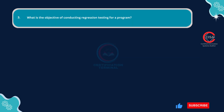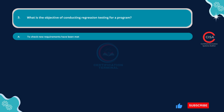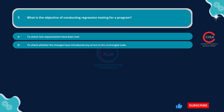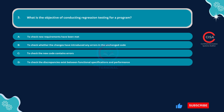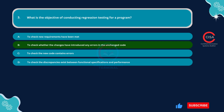Question 3: What is the objective of conducting regression testing for a program? Option A: To check new requirements have been met. Option B: To check whether the changes have introduced any errors in the unchanged code. Option C: To check the new code contains errors. Option D: To check that discrepancies exist between functional specifications and performance. The correct answer is Option B: To check whether the changes have introduced any errors in the unchanged code.